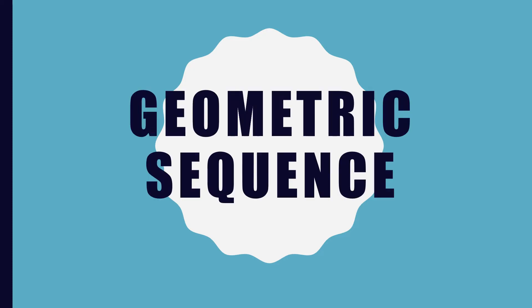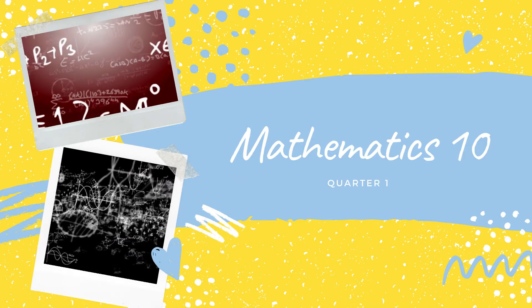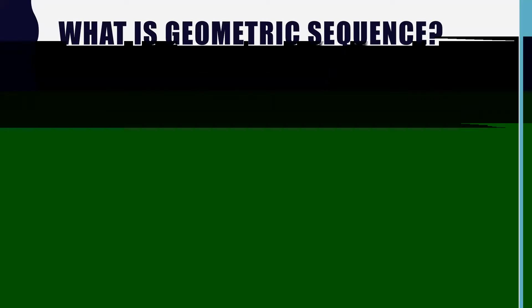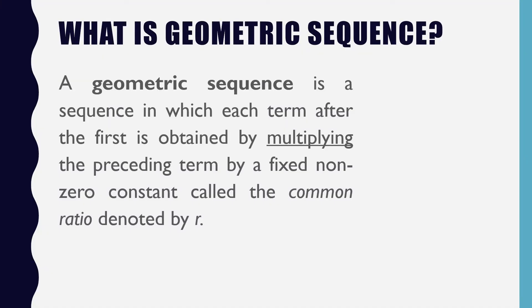In this video, you will learn about geometric sequences. A geometric sequence is a sequence in which each term after the first is obtained by multiplying the preceding term by a fixed non-zero constant called the common ratio, denoted by the letter R.